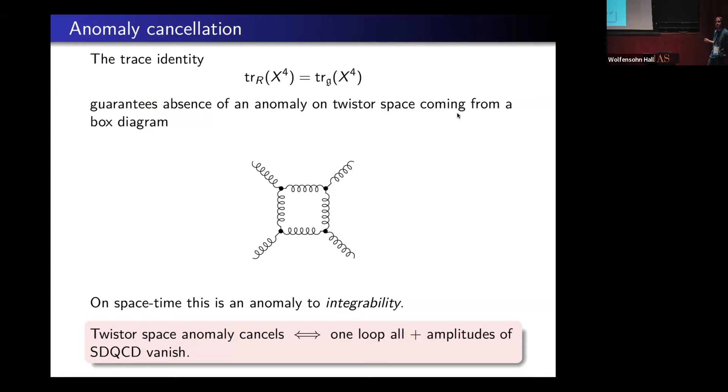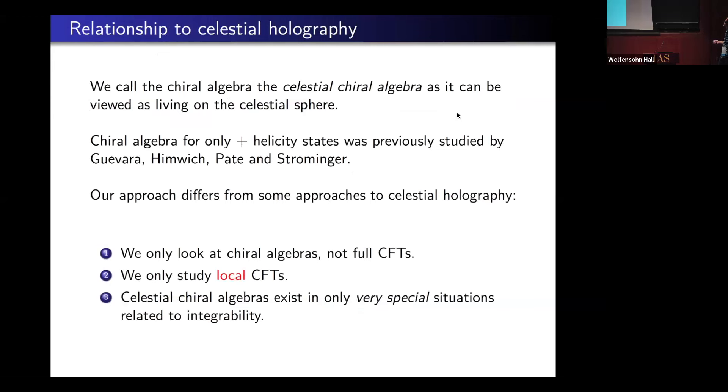This identity holding—it's an abstract result from twistor theory that this identity implies the one-loop all-plus amplitudes vanish. Suppose you forget about twistor theory, and you go to compute the one-loop all-plus amplitudes in a theory satisfying this identity. They are not obviously zero. But they are zero through some kind of non-trivial kinematic identities. This was studied by Lance and Anthony, and hopefully their paper on this will be out soon.